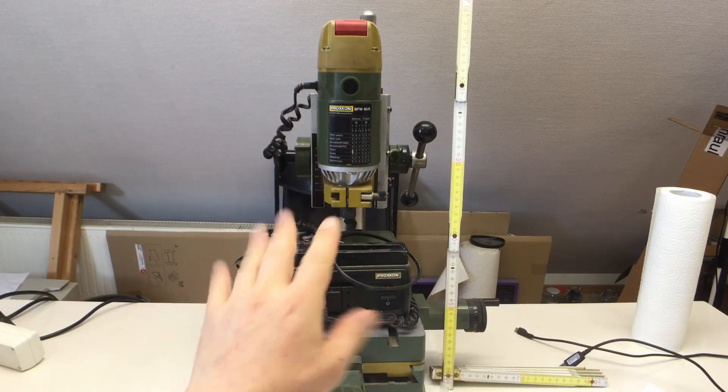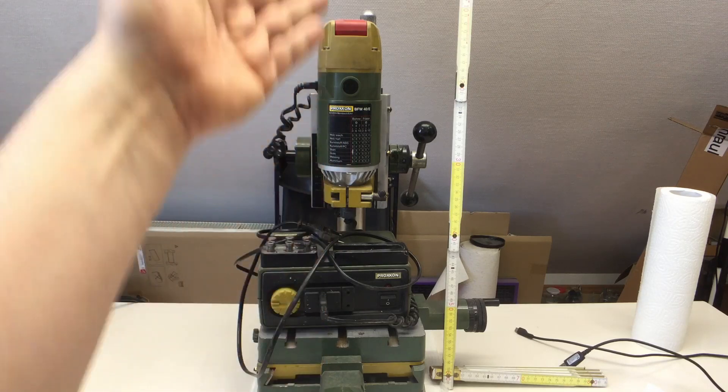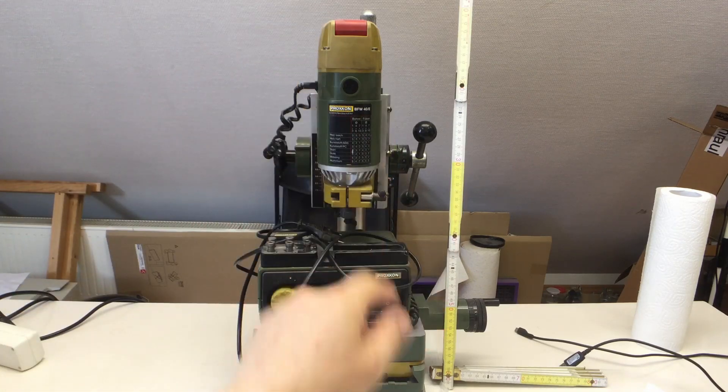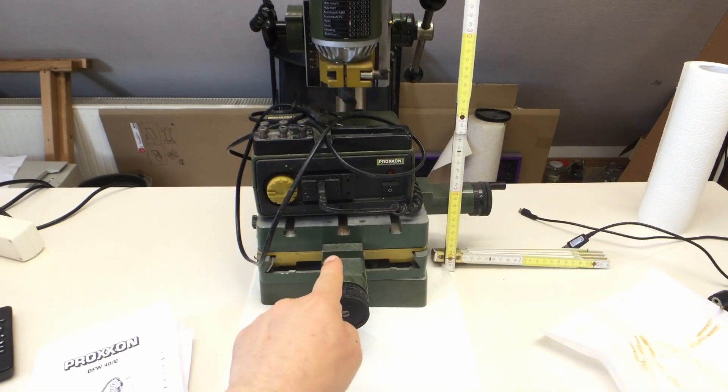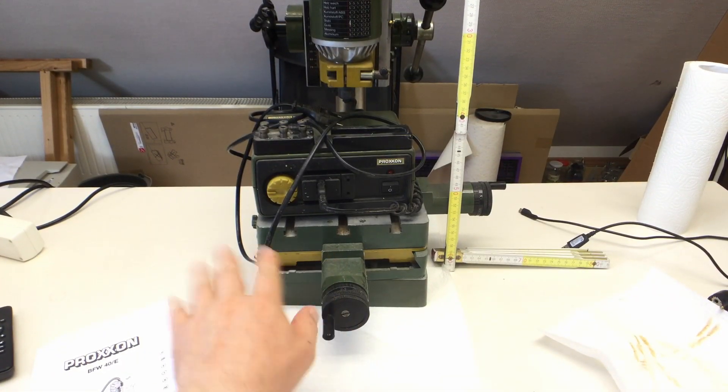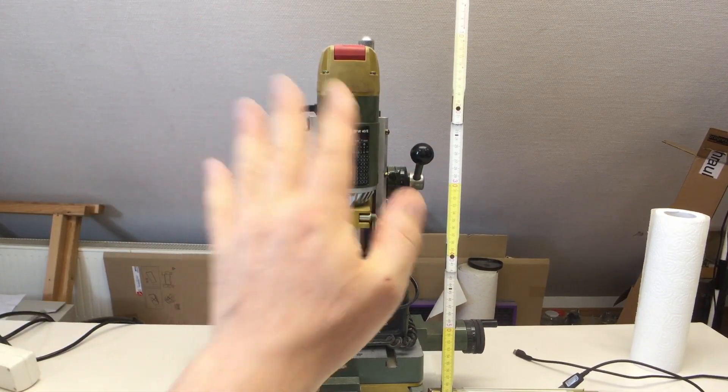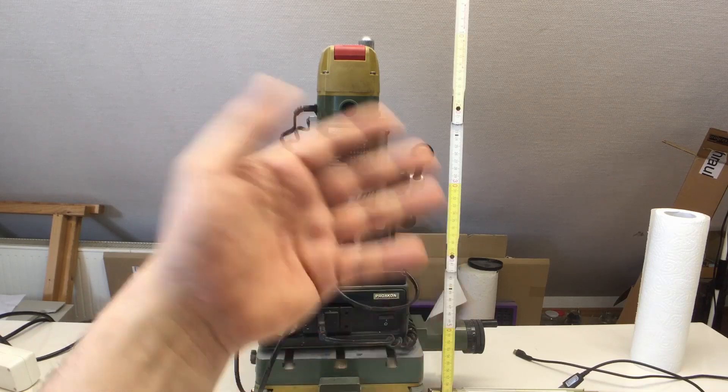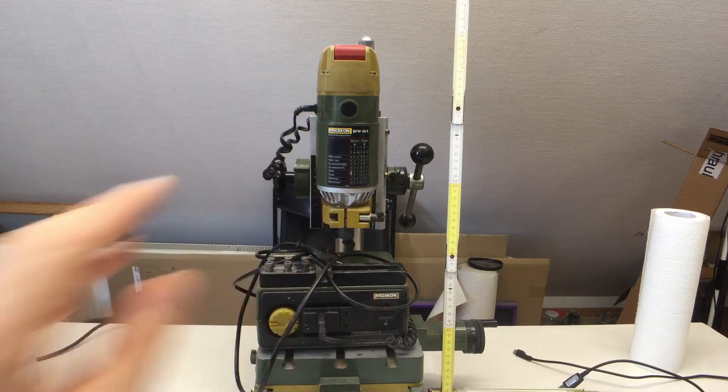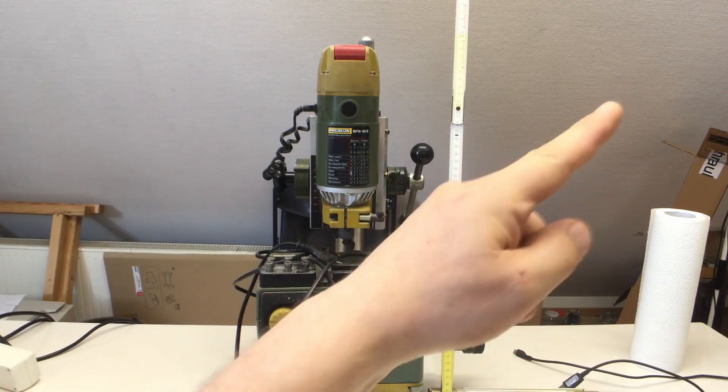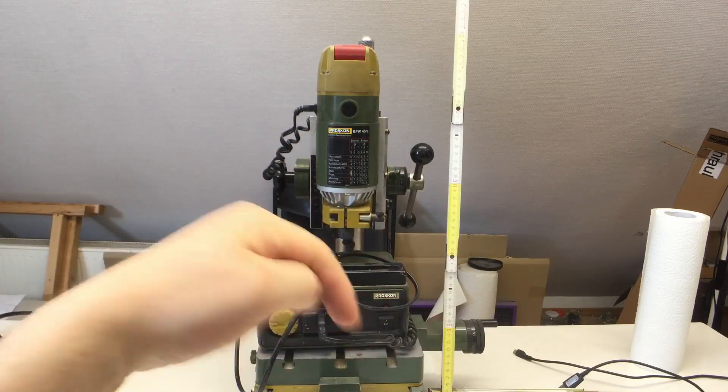Welcome back! Almost one year ago I bought this Proxxon milling combo consisting of a BFW 40/E spindle, a KT150 compound table, and of course the stand, that would be a BFB 2000 milling/drilling stand. Cut to the unboxing video after I bought it here, link in the description.